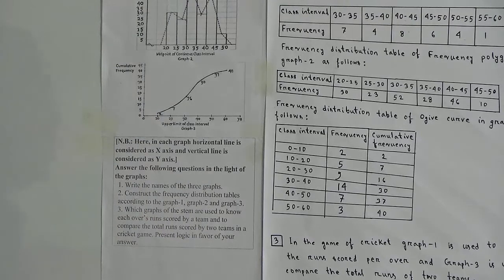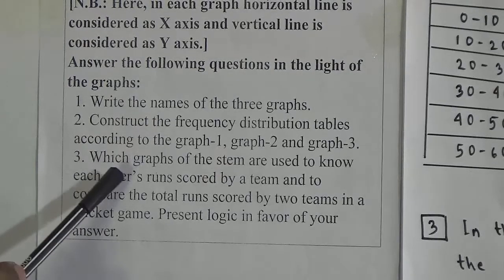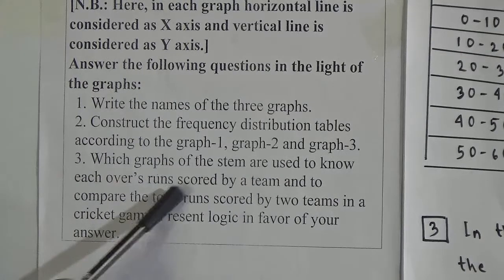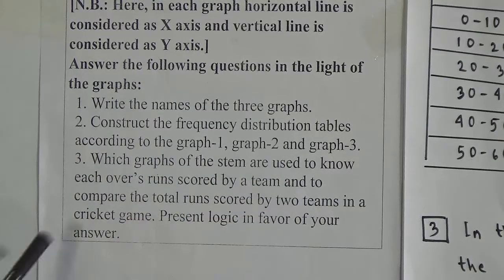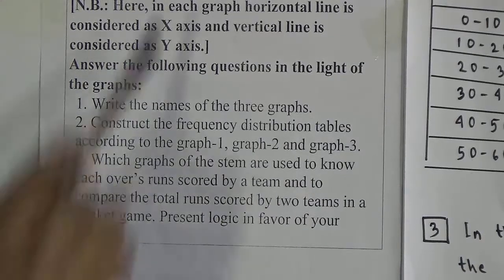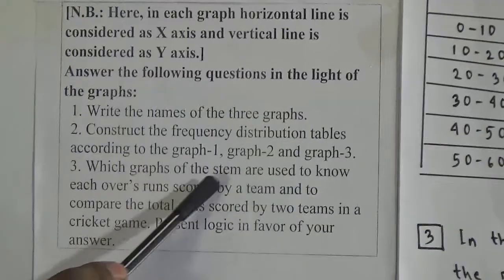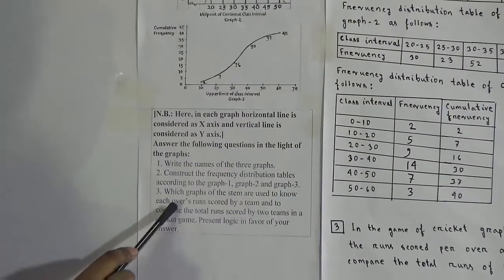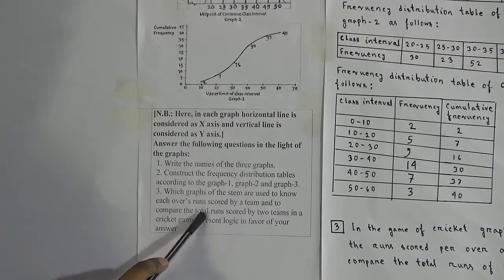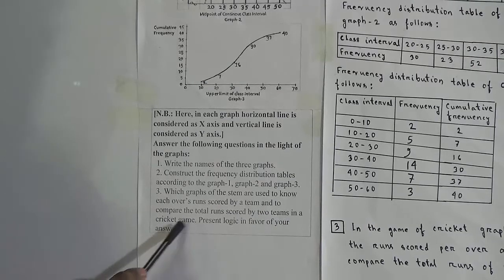Now we will solve question three. The question is: which graphs of the given set are used to know each over's runs scored by a team, and to compare the total runs scored by two teams in a cricket game? Present logic in favor of your answer.